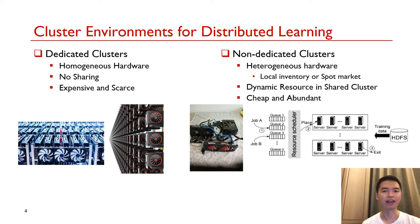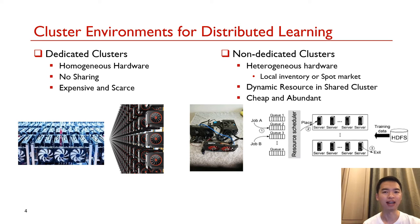There are various cluster environments for distributed learning. Here, we classify them into dedicated clusters and non-dedicated ones. Dedicated clusters are composed of homogeneous hardware and have excellent performance. However, dedicated clusters are very expensive to maintain. In contrast, non-dedicated clusters have heterogeneous hardware and dynamic resources. For example, a budget-limited user may choose to train models with heterogeneous GPUs in local inventory or from the public cloud market. Meanwhile, large enterprises often host multiple machine learning jobs in shared production clusters. Compared with dedicated ones, non-dedicated clusters are much cheaper and easier to access. We can imagine that model training in non-dedicated clusters would be more common in the future, which is the research focus of this work.